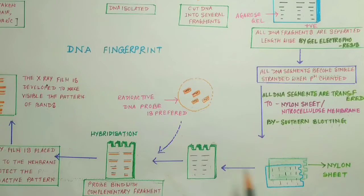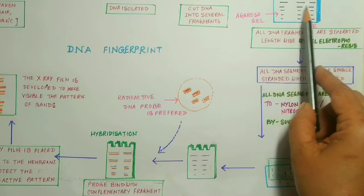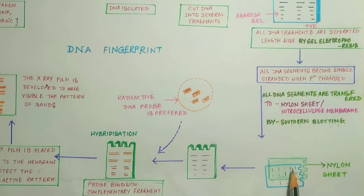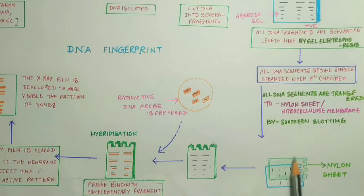To count the pattern of bands of DNA strands, this DNA strand has to be shifted from the gel sheet to nylon sheet or nitrocellulose membrane. For this, one nylon sheet is brought and kept above this gel sheet and tapped one or two times. As a result, the DNA fragments which are present in the gel sheet will shift to this nylon sheet, and they look like this.